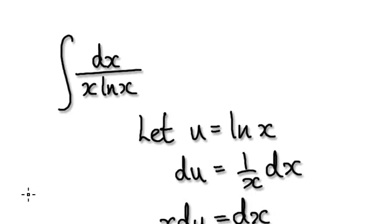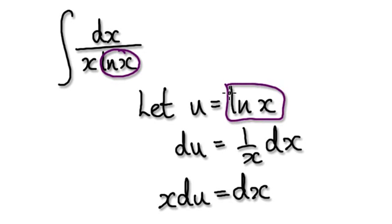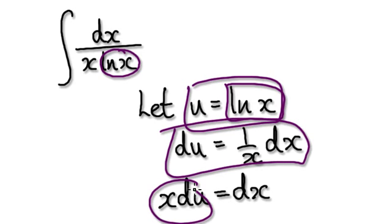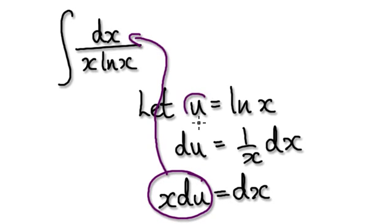So to do this, let u equal this thing here. If u equals this thing, then du equals this and dx equals this. So follow our normal routine — put the dx back in and put the u into this bit here.